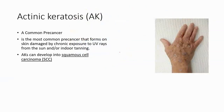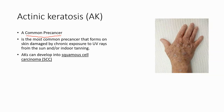Let me start with actinic keratosis, which wasn't on that graph because it's not a cancer — it's a common pre-cancer, a precursor to cancer. It's the most common pre-cancer that forms on skin damaged by chronic exposure to ultraviolet rays, generally from the sun or tanning beds. Actinic keratosis can develop into squamous cell carcinoma, though some do and some don't. Since we don't know which ones will, this is something we do want to treat and get rid of.